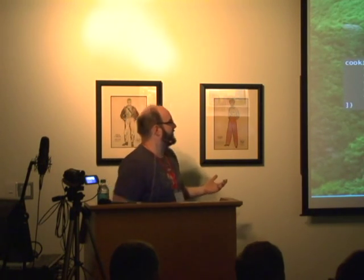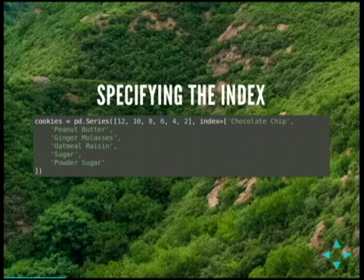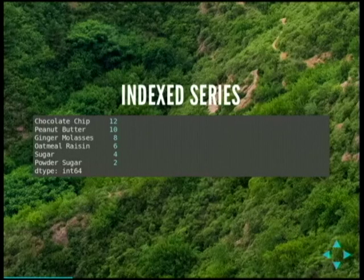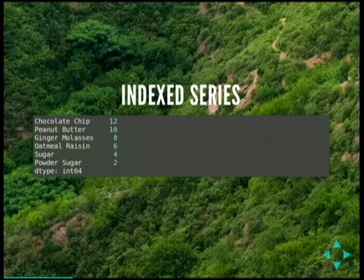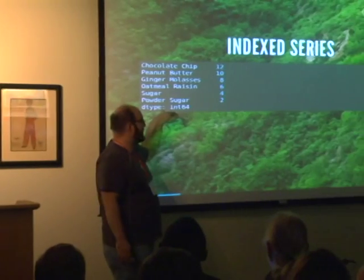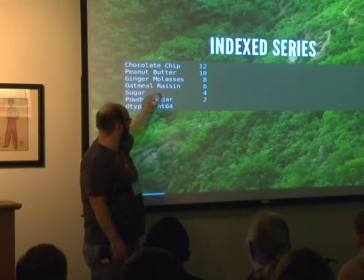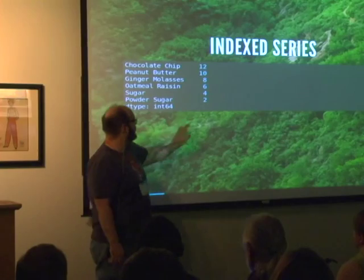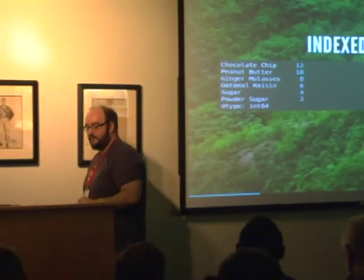Here we are with an indexed series — the cookie type is the index and these are the counts. Notice the index is now a string, but the value of the vector is an integer — that's why the data type changed. The dtype refers to the actual values of the vector, not the index. That's checkable — you can say give me a list of all data elements that aren't of a certain type, like int64, and get just those.